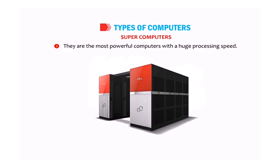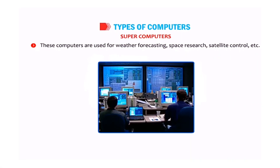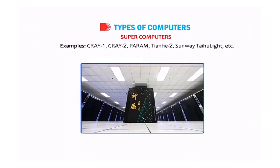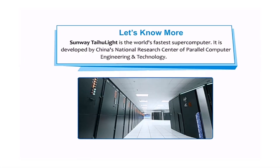Supercomputers are the most powerful computers with huge processing speed. They are used for weather forecasting, space research, satellite control, etc. Examples include Cray-1, Cray-2, India's own supercomputer Param, Tianhe-2, and Sunway TaihuLight. Sunway TaihuLight is the world's fastest supercomputer and was developed by China's National Research Center of Parallel Computer Engineering and Technology.